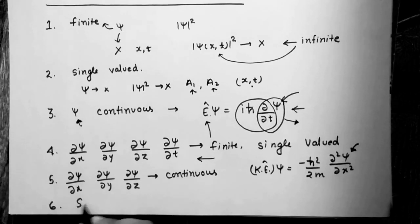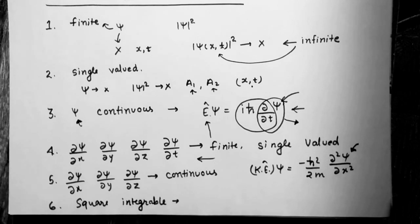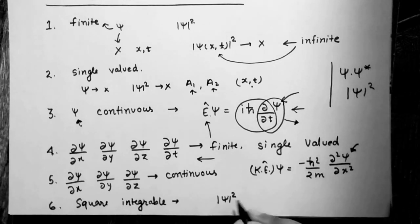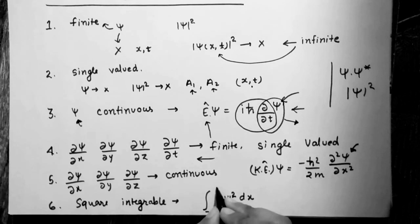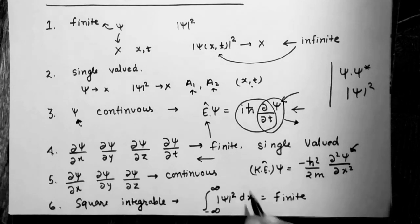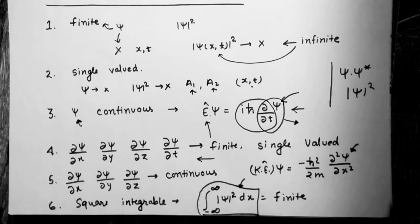The last condition on the wave function is that it must be square integrable in all space. Since the wave function is complex, we multiply it by its complex conjugate, that is ψ* · ψ. Integrating this from minus infinity to infinity, the value must be finite. If we look at this quantity closely, it is the probability to find the particle in all space — and probability cannot be infinite, so this condition must be imposed on a well-behaved, physically acceptable wave function.